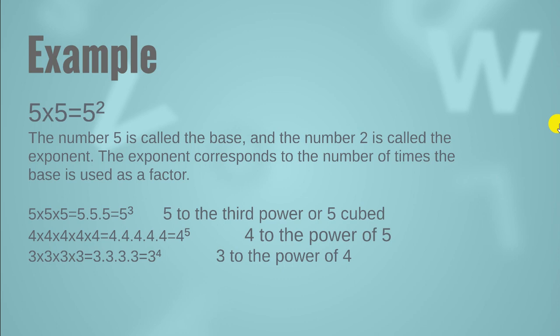In the other example, you can see that we are multiplying 4 by itself five times, so we write it as 4 raised to the power 5. And in another example, you can see that we are multiplying 3 four times by itself, so we write it as 3 raised to the power of 4.